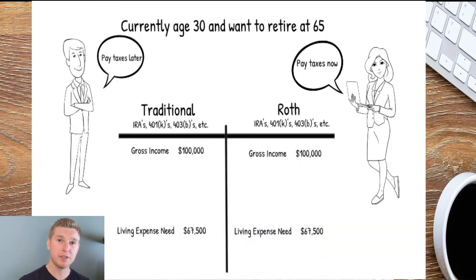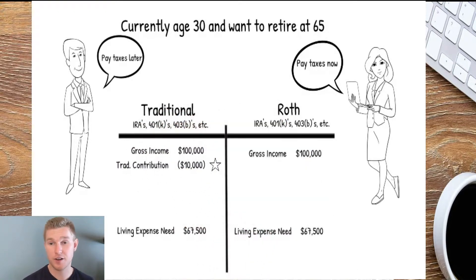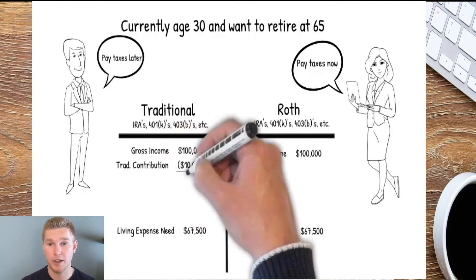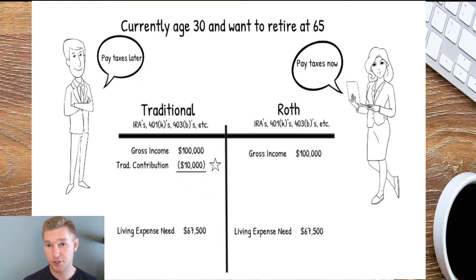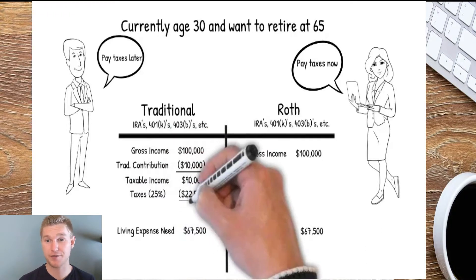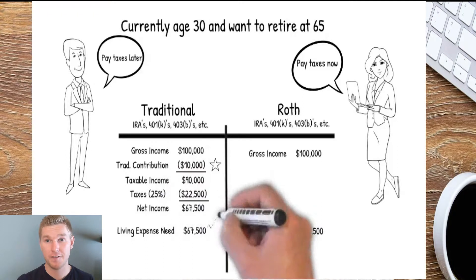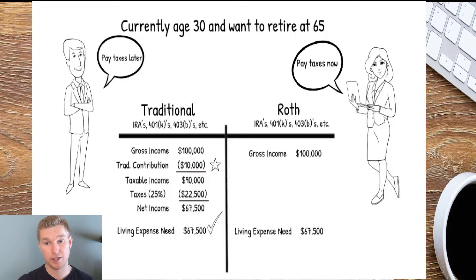Let's dive into Tom's scenario. His gross income is $100,000. He contributes $10,000 to his traditional 401k, which is a deduction, so it reduces his taxable income to $90,000. He then pays 25% in tax, which is $22,500, leaving his net income at $67,500 — exactly what his living expenses are.